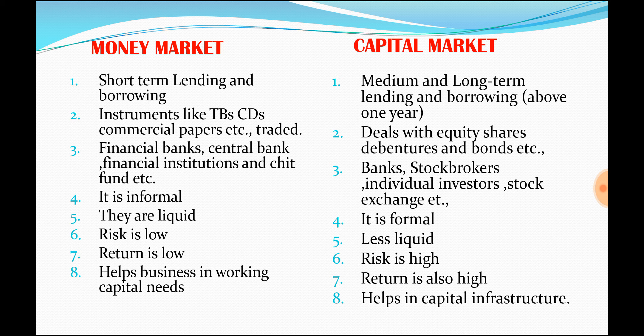Here is a tabulated difference between money market and capital market. Money market involves short term lending and borrowing, while capital market involves medium and long term lending and borrowing. Money market uses instruments like treasury bills, certificate of deposit, and commercial paper, while capital market deals with equity shares, debentures, and bonds. In the money market, participants include banks, central bank RBI, financial institutions, and chit funds. In the capital market, banks are also involved, and additionally there are stock brokers, individual investors, and stock exchanges.